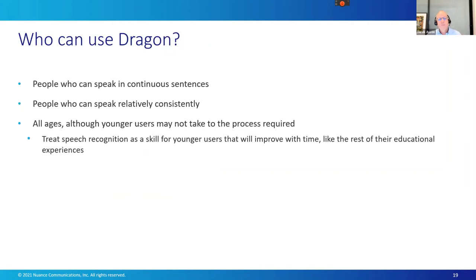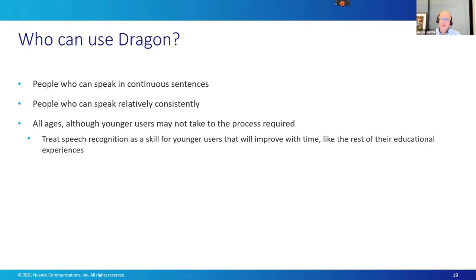Who can use Dragon? You really need to be able to speak in continuous sentences. The original product was called Dragon Dictate, which required you to speak word... by... word. The second generation, called Dragon Naturally Speaking, released in 1997, meant you could talk normally. Dragon now requires that you speak normally because it uses context information to work out what you said. You also need to be able to speak relatively consistently — if you have an issue that causes your voice to vary a lot from day to day, Dragon may or may not work for you. You'd have to try it and see.